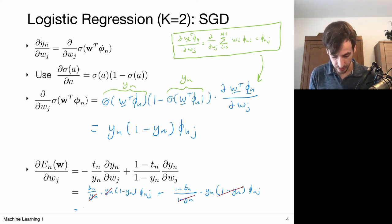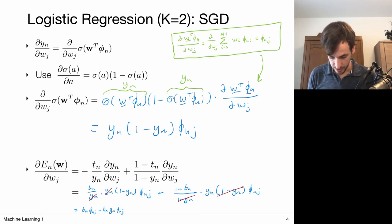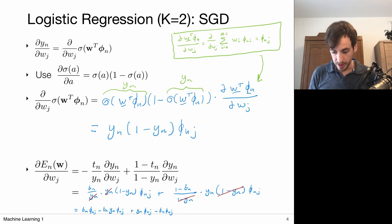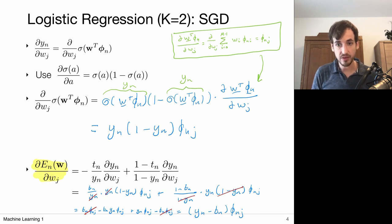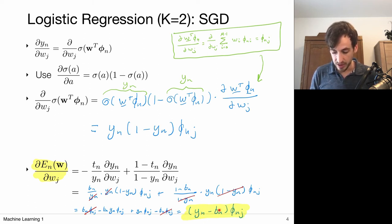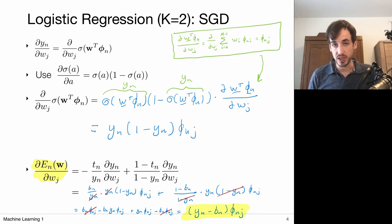Writing it out: t_n phi_{n,j} minus t_n y_n phi_{n,j}, plus y_n phi_{n,j} minus t_n phi_{n,j}. The t_n phi_{n,j} terms cancel, and what we are left with is a very simple expression for the gradient: (y_n minus t_n) times phi_{n,j}. We computed the derivative of the j-th component of this error function, and it simplifies to the prediction error times the j-th component of the feature vector associated with data point n.